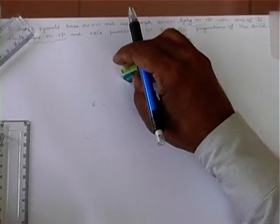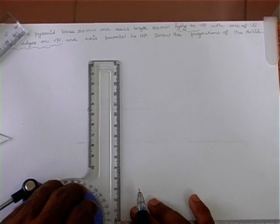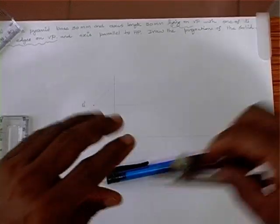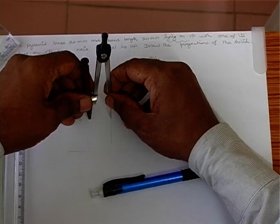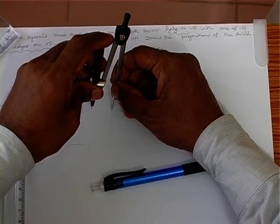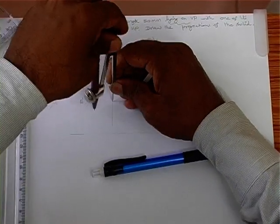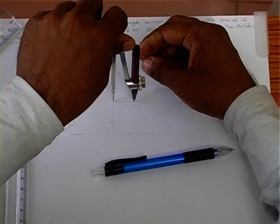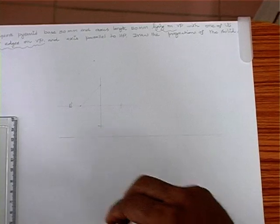We can erase the remaining part and easily duplicate the square in this position by just projecting the points to get the remaining portions. By taking this measurement and placing it at the bottom, and doing the same on the other side, when we join them we get the square in corner position.